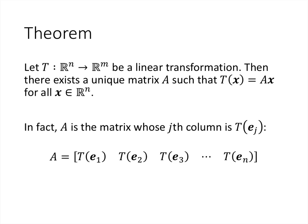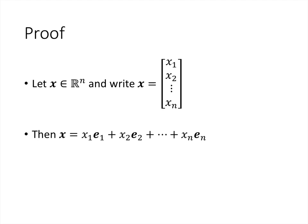Putting these two ideas together gives us this theorem: when we have a linear transformation, there exists a unique matrix A such that T(X) = A·X for all X in R^n. In other words, every linear transformation is a matrix transformation, and we can figure out exactly what that matrix is — it's the matrix whose columns are T applied to the standard basis vectors. We need to prove two things: that T(X) = AX holds, and that A is unique — no other matrix could do that.